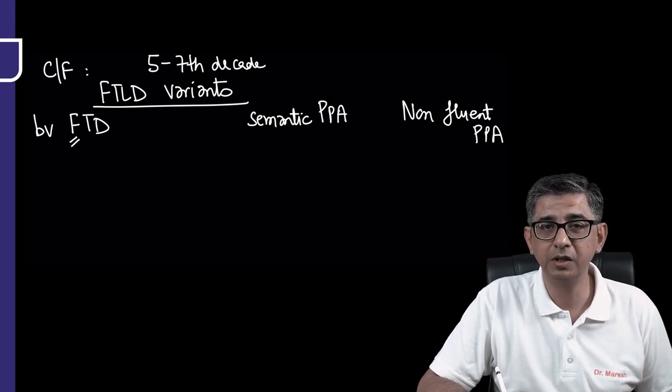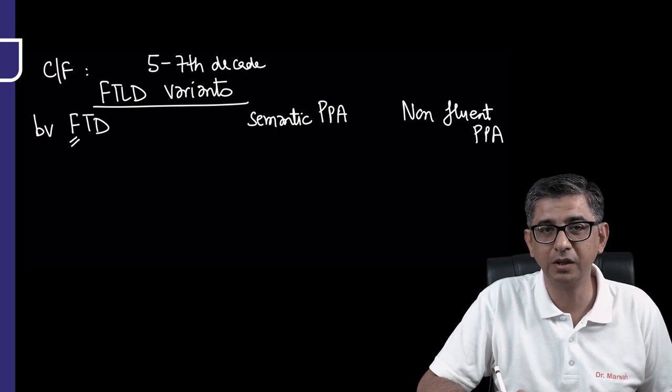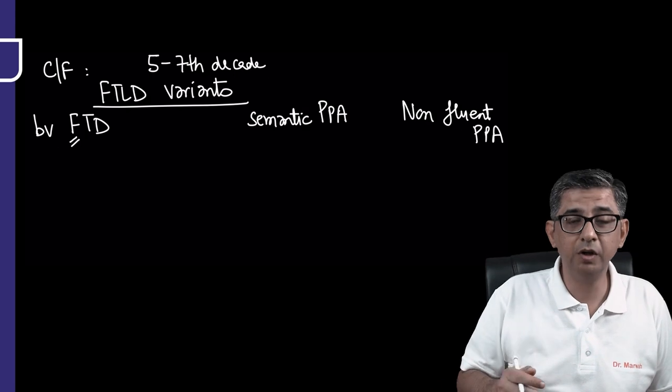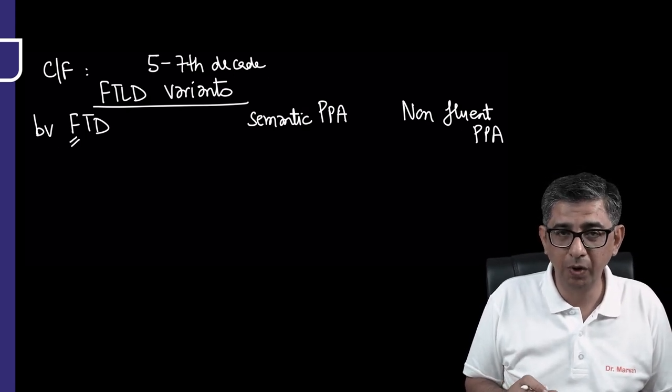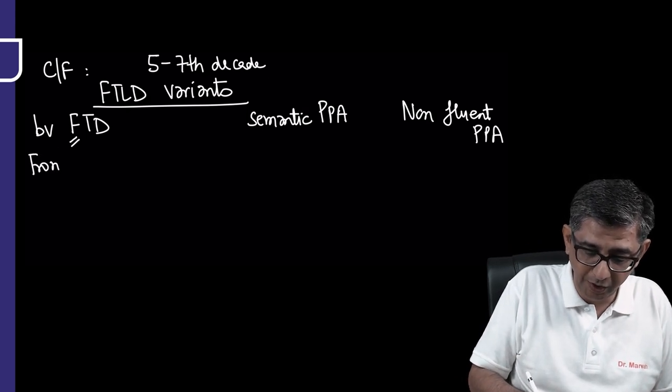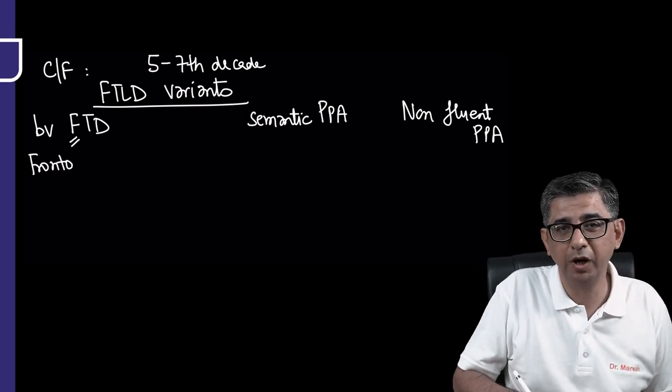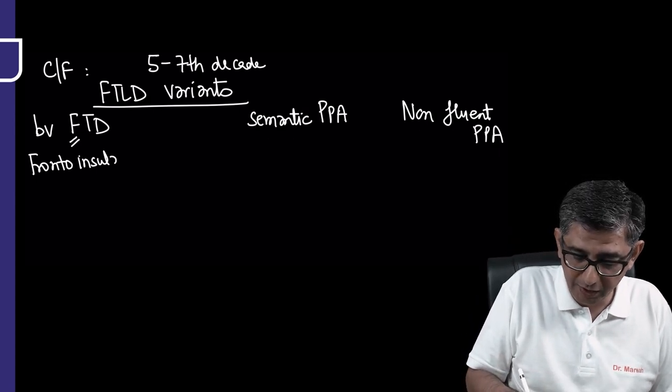We tend to use social grace, especially when we meet elders. In the behavioral variety of frontotemporal dementia, we have a marked change in personality. The question might ask which part of the brain is involved - it's obviously the frontal lobe as well as the insula.